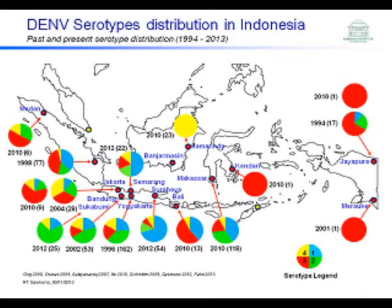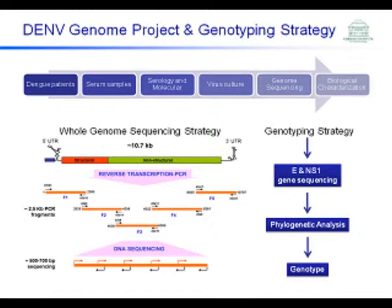This is the serotype distribution of dengue in Indonesia from eight cities. In each city the distribution is quite diverse, and the serotype distribution changes over time. We have data from 2002 and 1996, and some newer data from 2012 in Surabaya and 2010 in Makassar. Basically, over time the distribution of serotypes is moving and changing, and the 2012 Surabaya data is different from previous data.